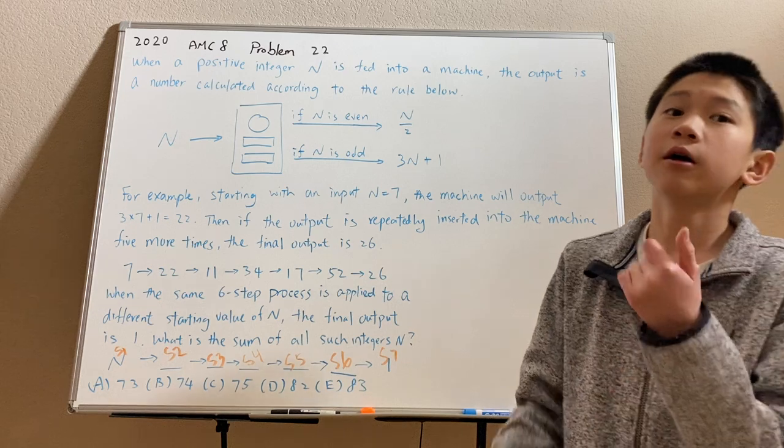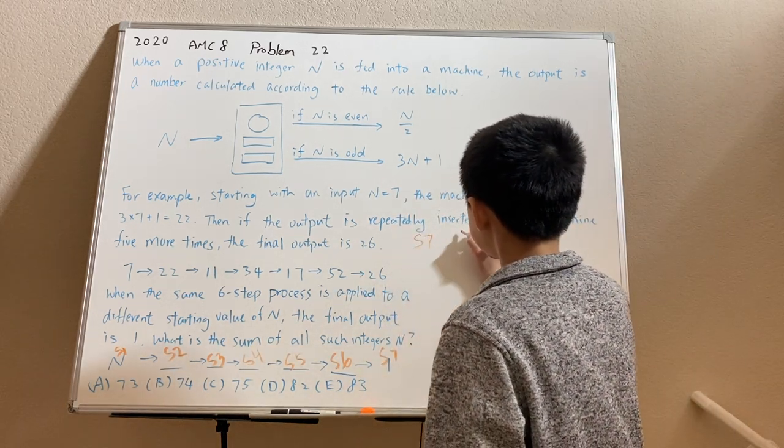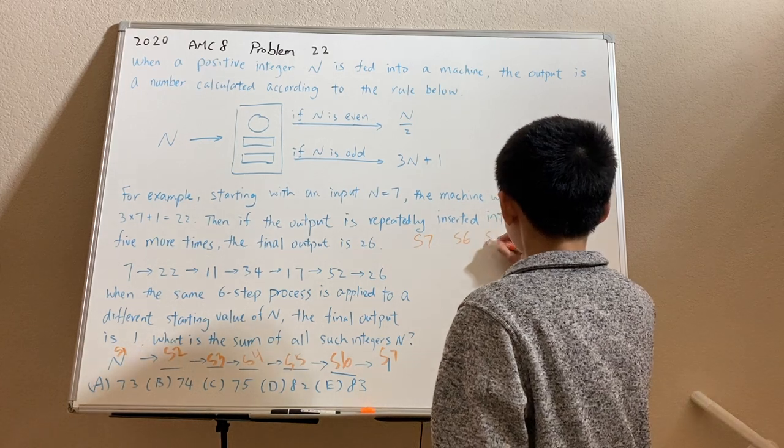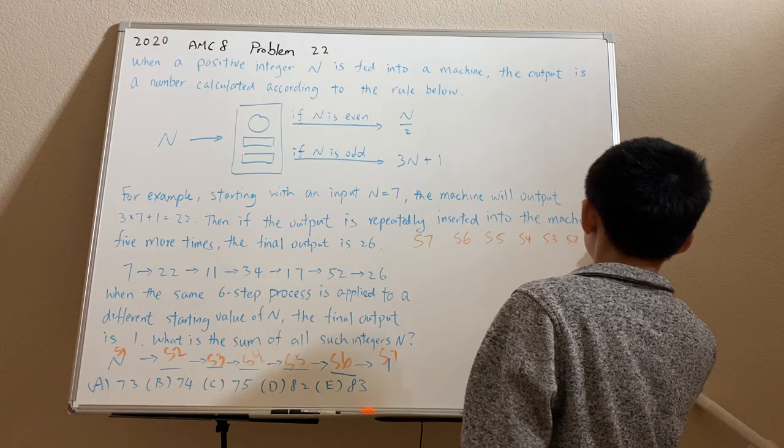So since we're working backwards, we want to write stage 7 first and then move to stage 1. So stage 7, stage 6, stage 5, stage 4, stage 3, stage 2, and that's stage 1.